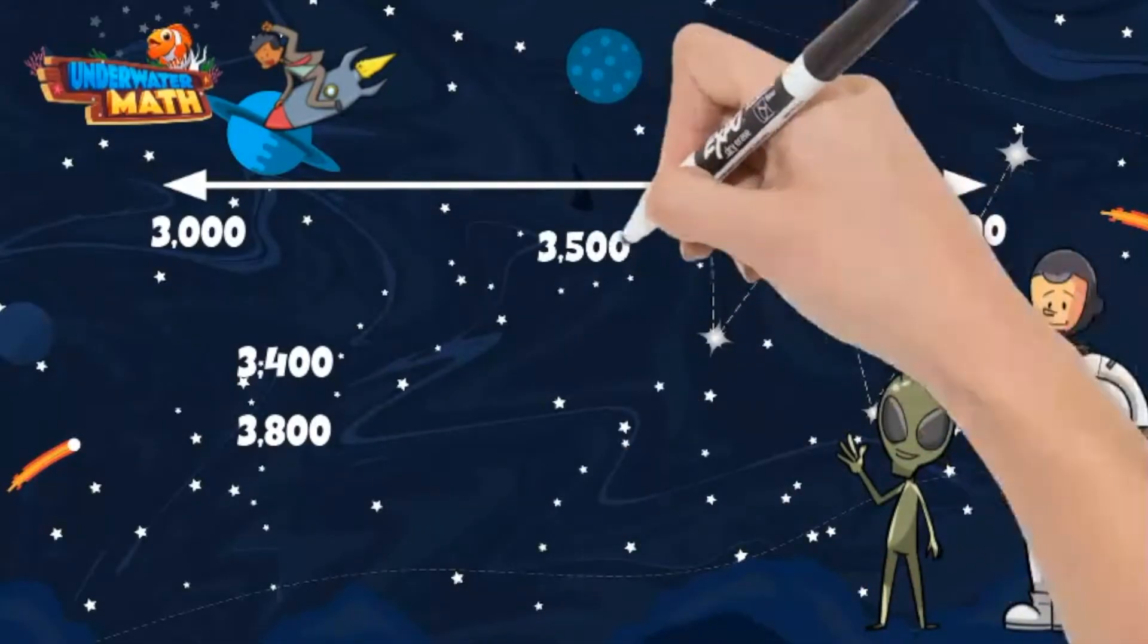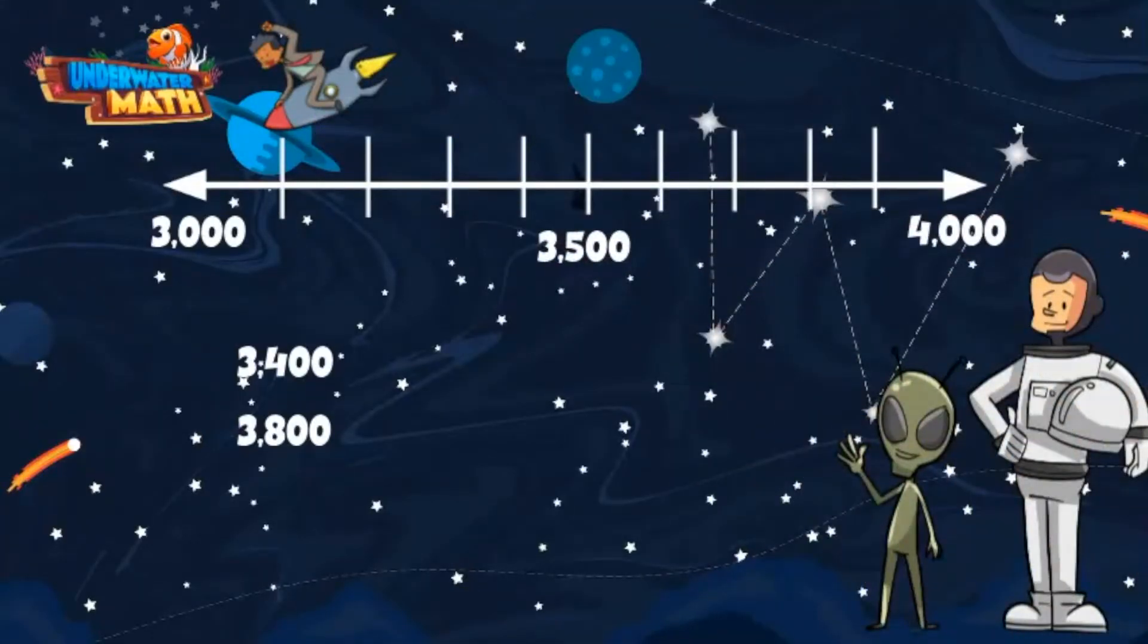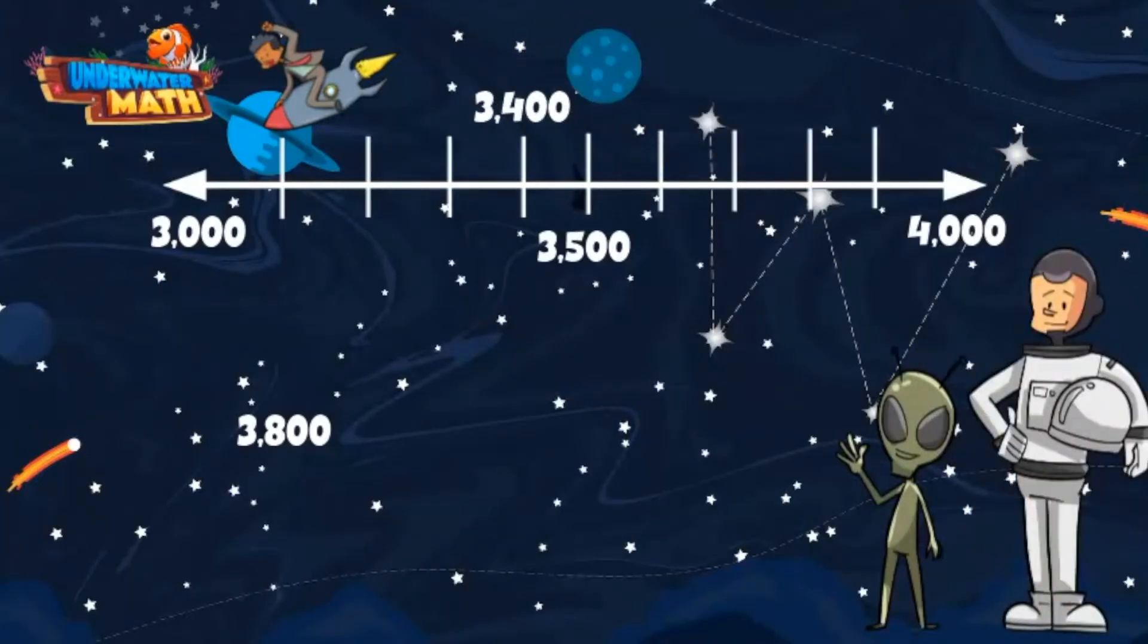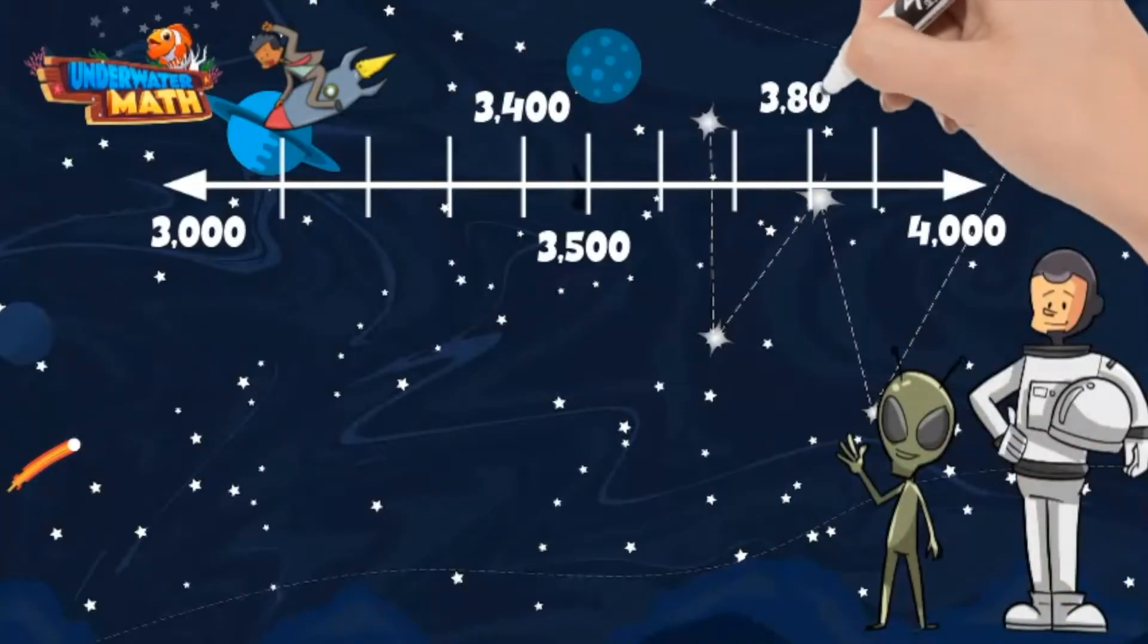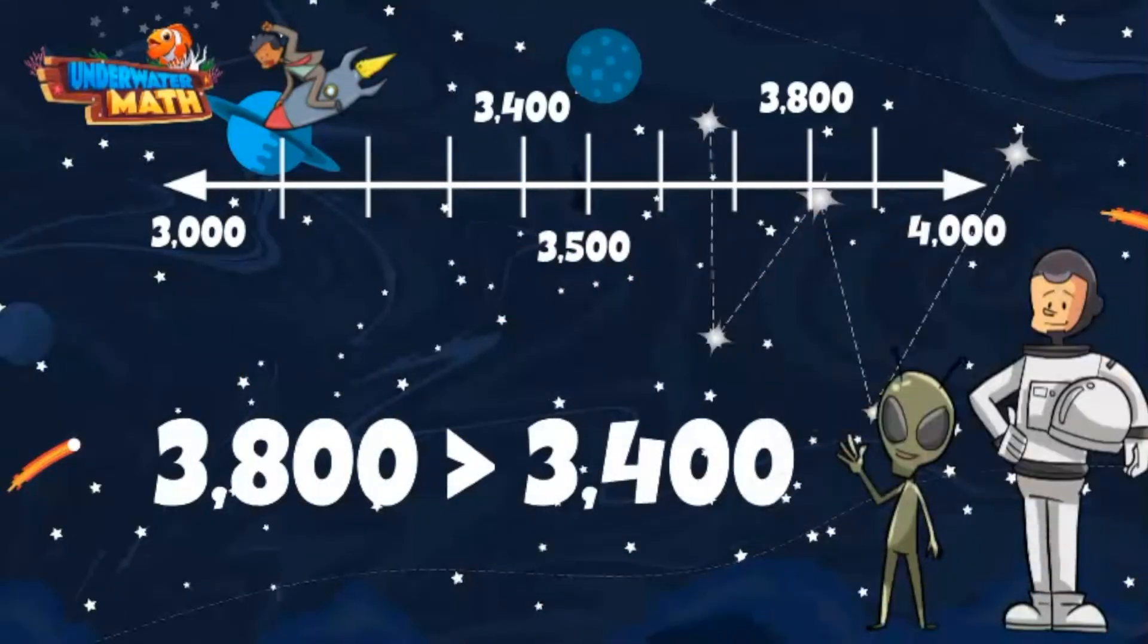I know smack dab in the middle of 3000 and 4000 is 3500. Our first number is 3400 and goes here on our number line. Our next number is 3800. I'll place it here. We can see on our number line that 3800 is greater than 3400. I'll use our comparison symbol again to show which is greater.